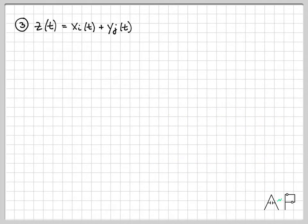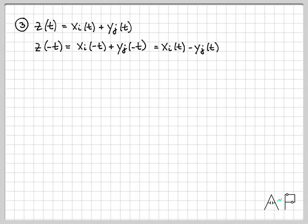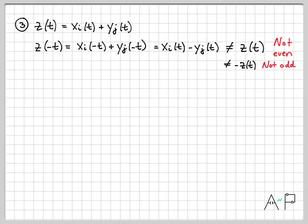What happens if I add an even to an odd? Let's compute z(-t) = xi(-t) + yj(-t). Since xi is even, xi(-t) = xi(t). Since yj is odd, yj(-t) = -yj(t). Notice this is not equal to z(t), so it's not even. It's also not equal to -z(t), so it's not odd. So adding an even signal and an odd signal gives a signal that is neither even nor odd — which isn't too surprising.